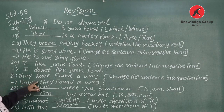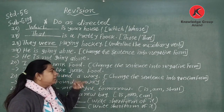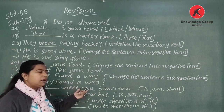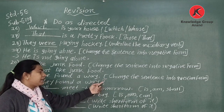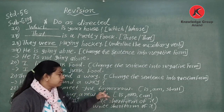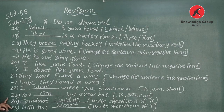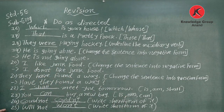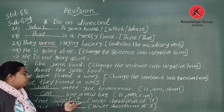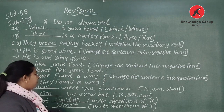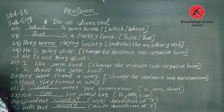Number twenty-one: 'They have found a way' — change to question form: 'Have they found a way?' Number twenty-three: 'You can buy a new bag.' Number twenty-four: 'Could not' short form is 'couldn't.' 'Will not' short form is 'won't.' Thank you so much. Let's do this exercise in English.